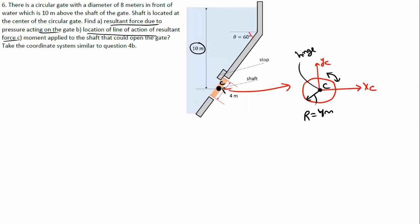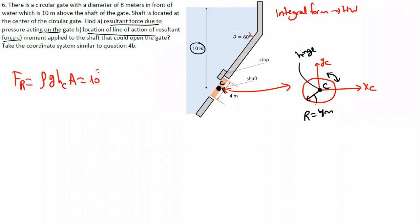Firstly, I'll find the resultant force Fr. You can use the integral form or the simplified form - I will do the simplified form here. Fr equals ρ·g·hc times area. Rho is 10³, g is 9.81, hc is the distance from the free surface to the centroid of the body, which is given as 10 meters, multiplied by the area πd²/4 where the diameter is 8 meters.